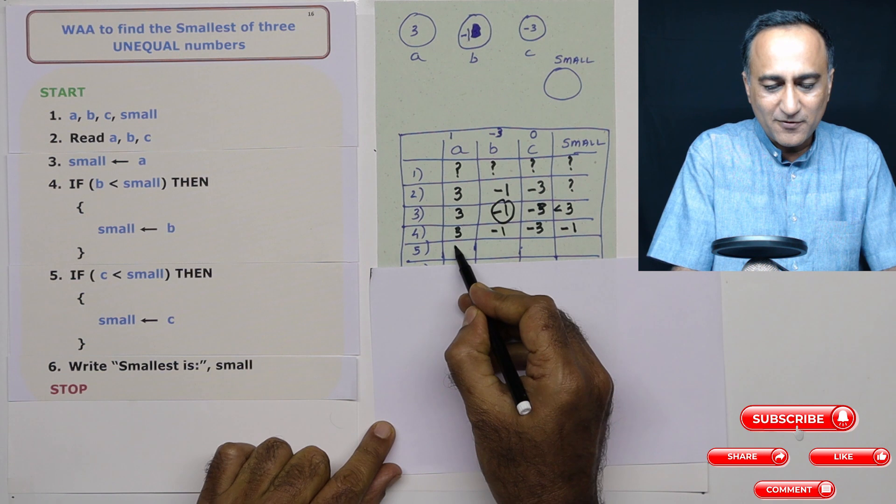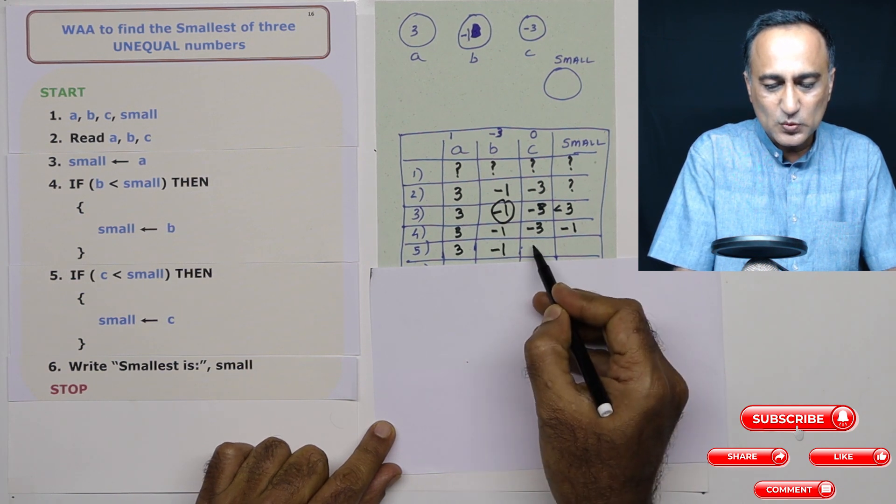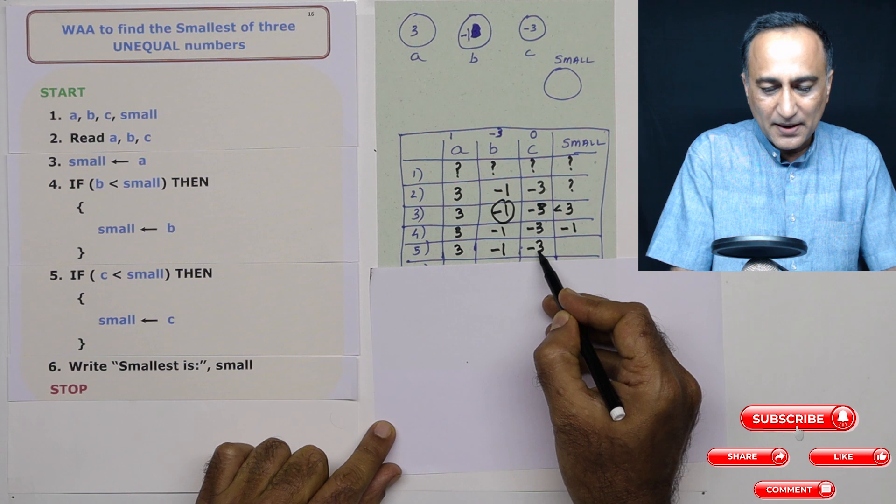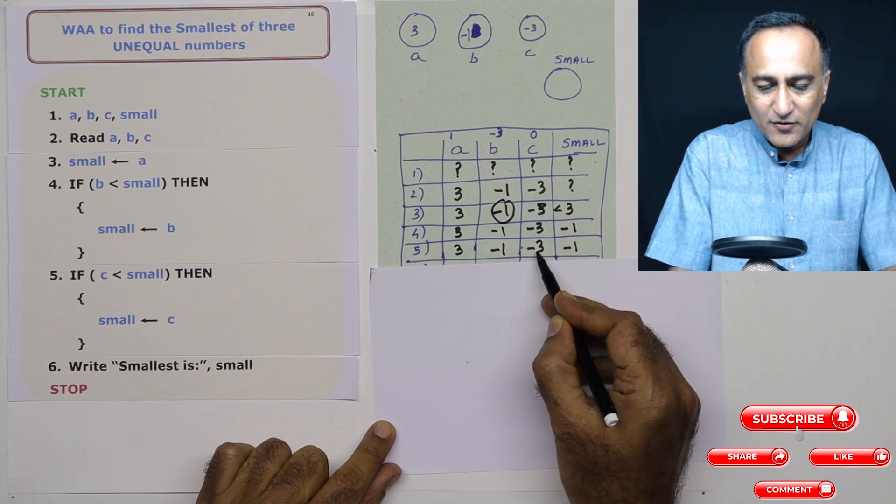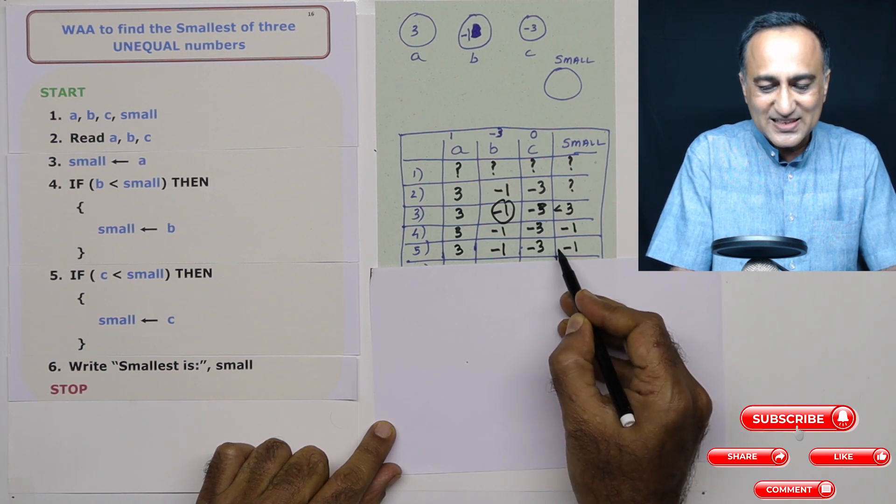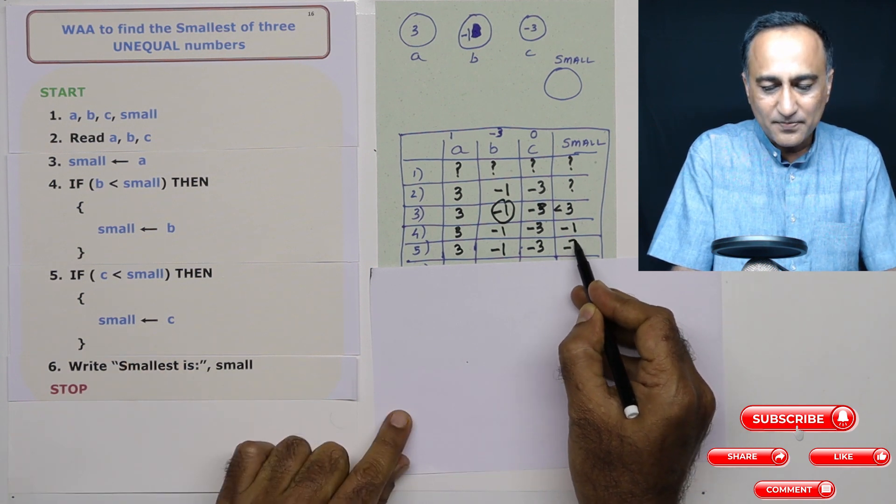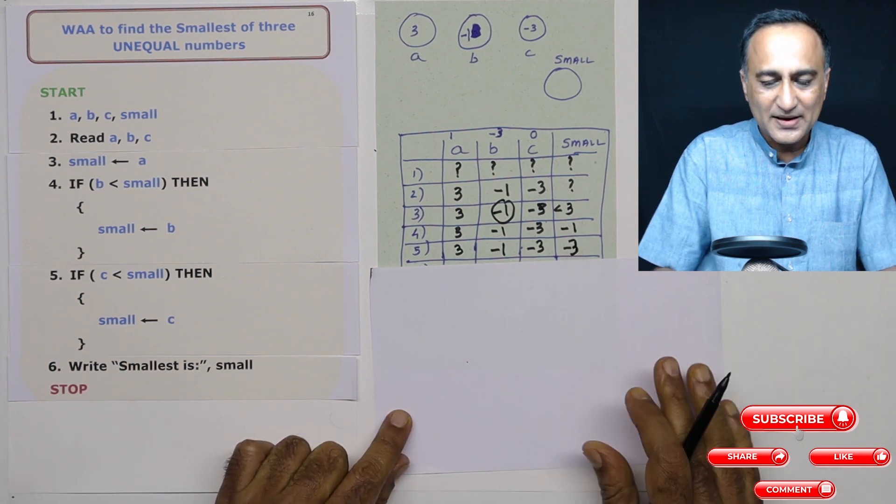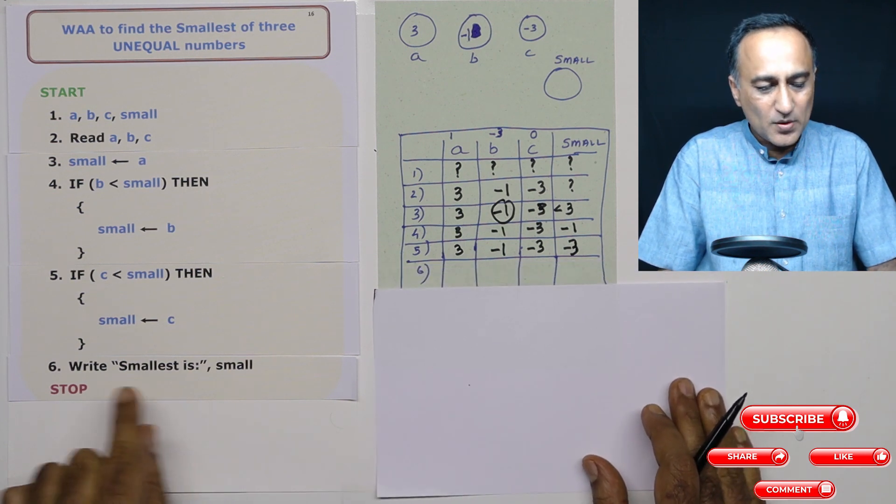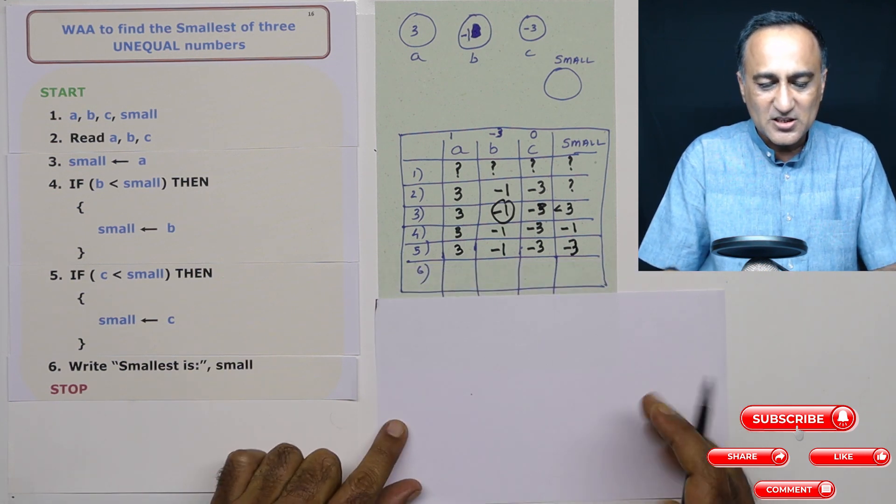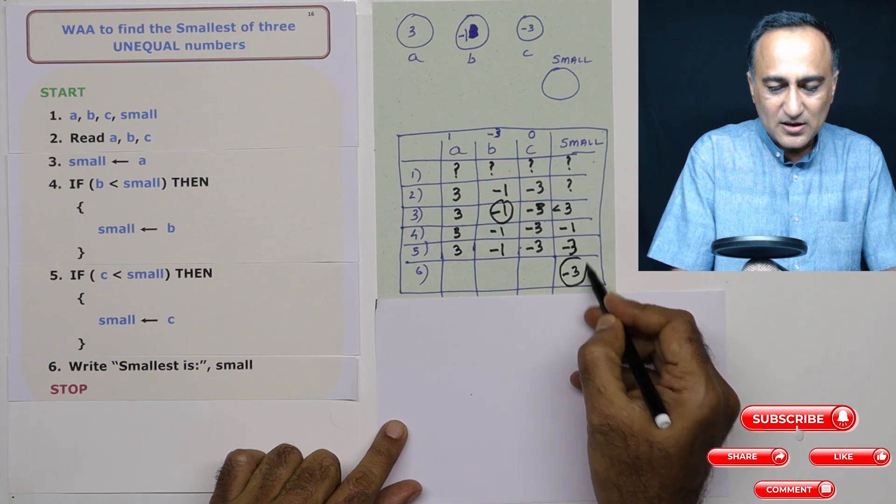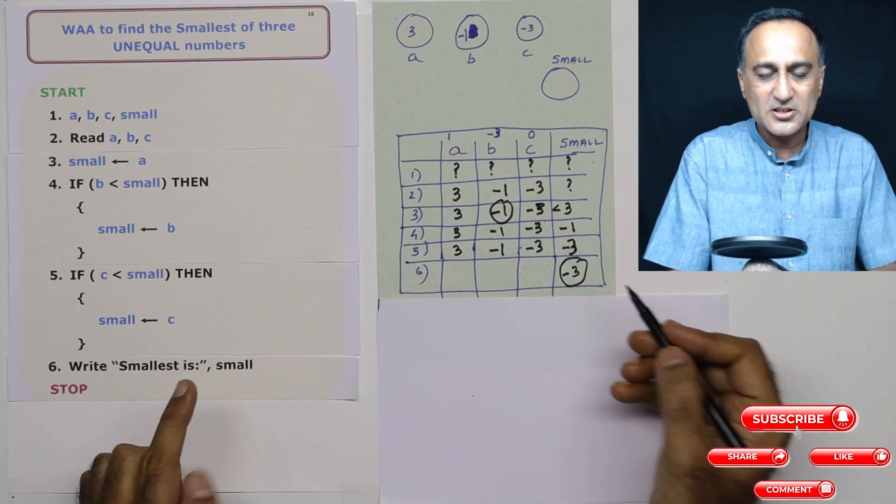Then I come to step number 5. This is 3, this is minus 1. Now I am comparing this fellow c, minus 3, with minus 1. Definitely minus 3 is less than minus 1. So my new value of small will become c. So this small becomes minus 3. And now in the last step, when I print the message, it is going to print minus 3 as the smallest.